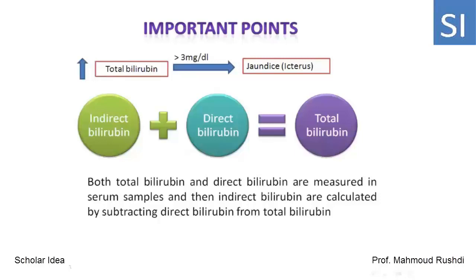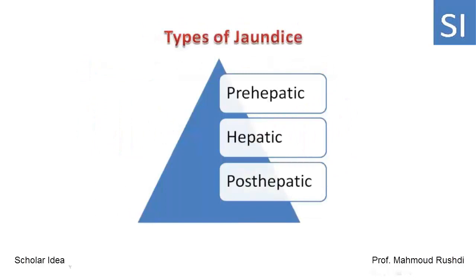When total bilirubin increases above 3 mg/dL, the result will be jaundice or icterus, which means discoloration of skin and mucous membranes due to high bilirubin levels in the blood circulation. The total bilirubin equals the sum of indirect bilirubin plus direct bilirubin. Both total bilirubin and direct bilirubin are measured in serum samples, and then indirect bilirubin is calculated by subtracting direct bilirubin from total bilirubin.